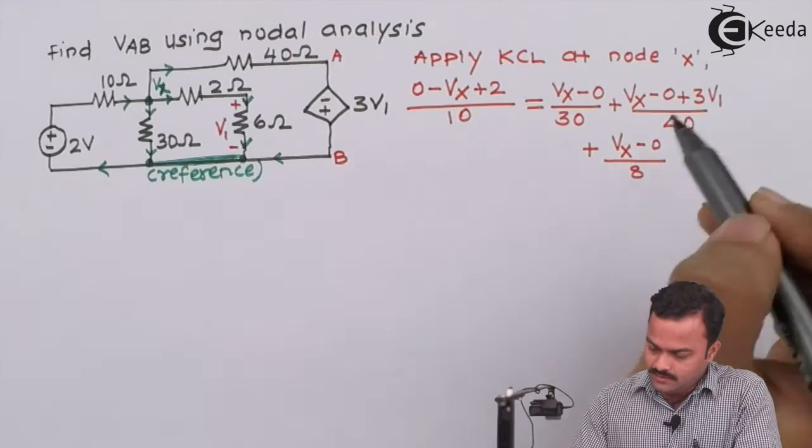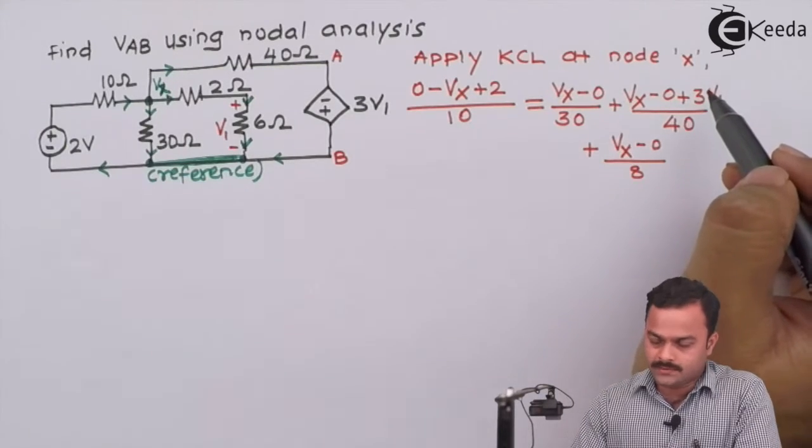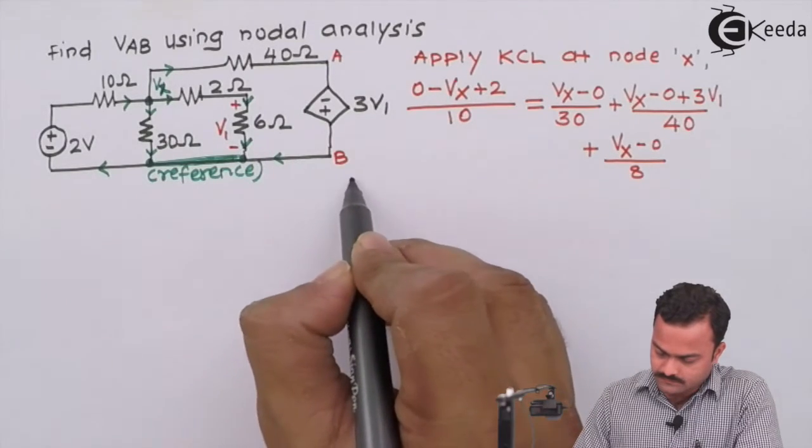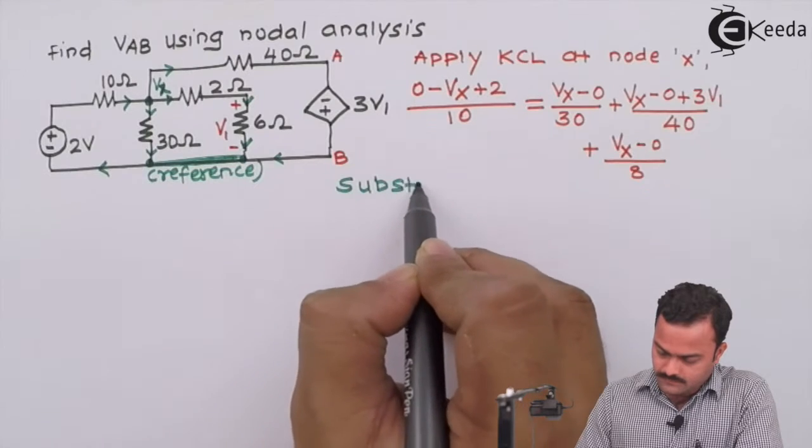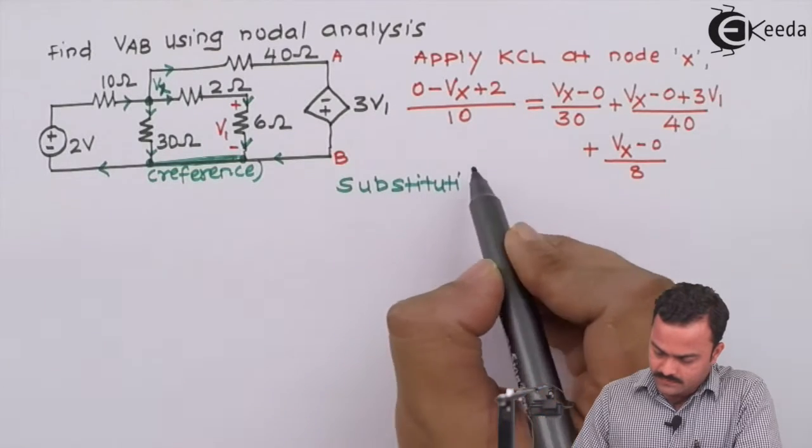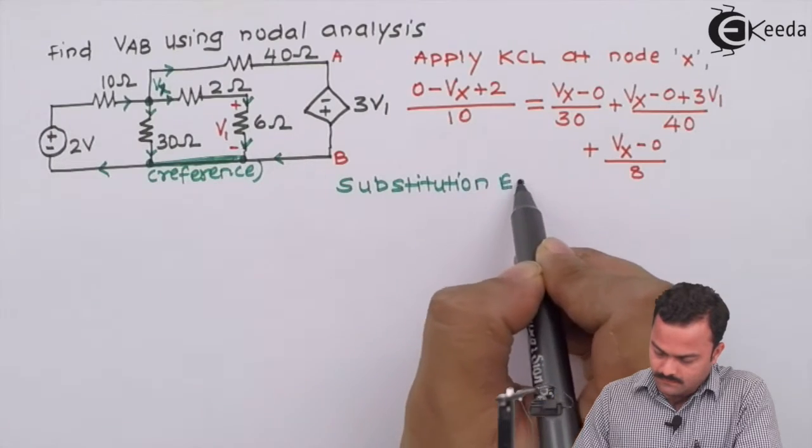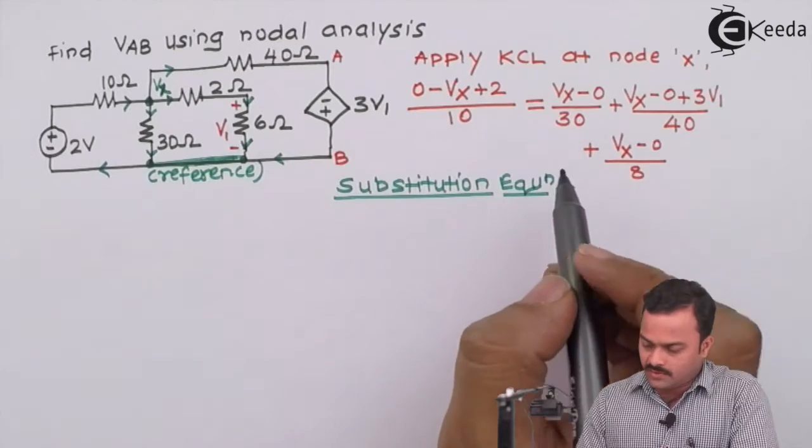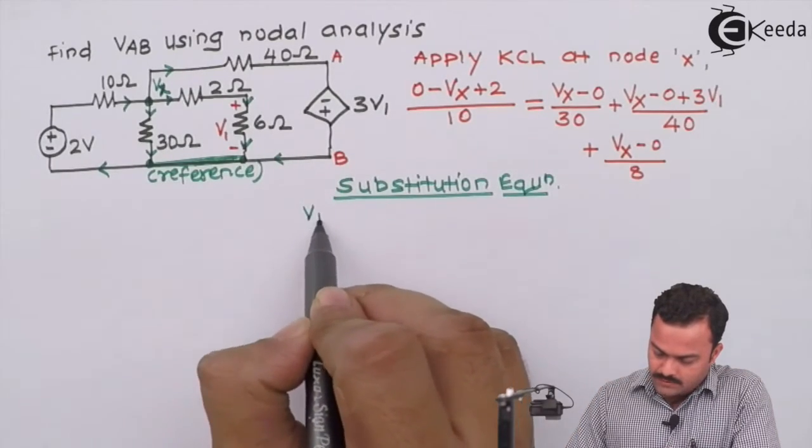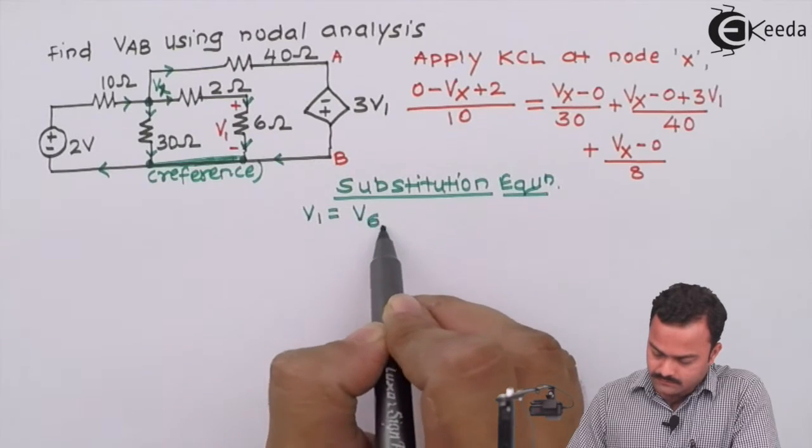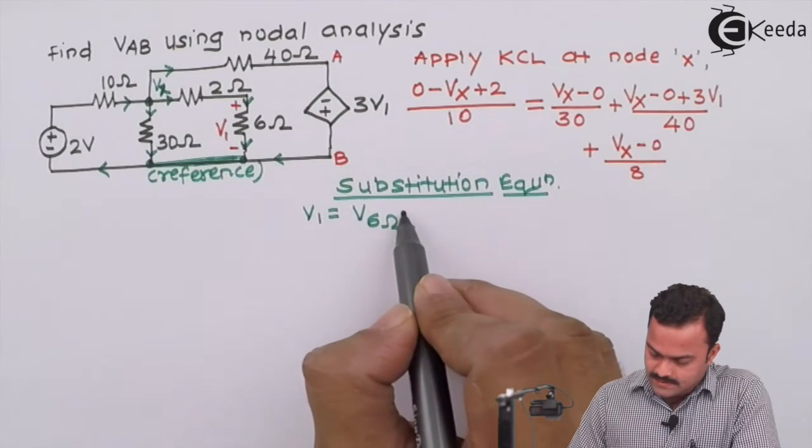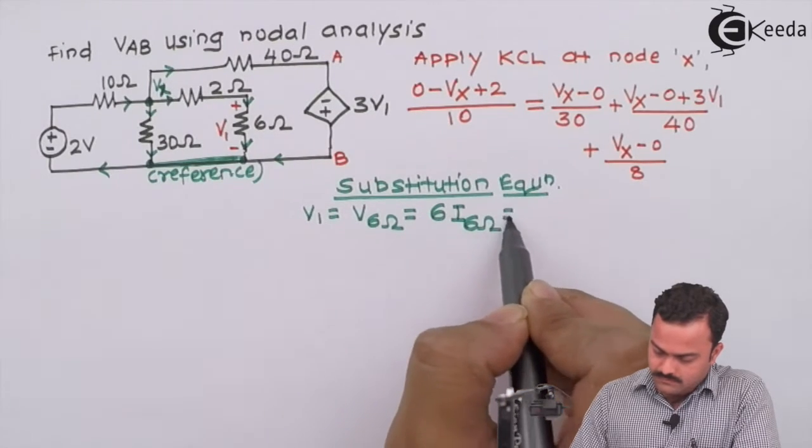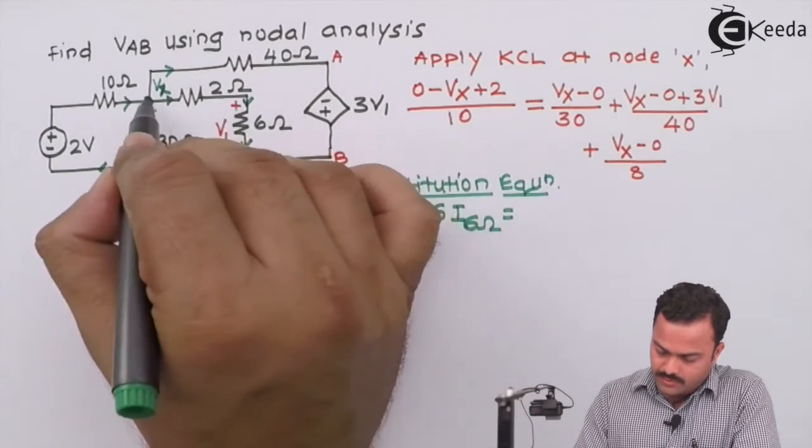In the equation, V1 is the variable which required a substitution. So we need to write a substitution equation. So we need a substitution for V1. So V1 is nothing but voltage across 6 Ohm. And I can say, by Ohm's law, it is 6 multiplied by I 6 Ohm. So this is I 6 Ohm.